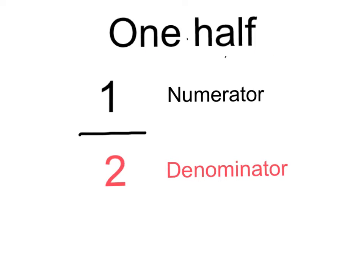Within that fraction, the top number, the number 1, is known as the numerator. That tells me the number of parts that I have. The bottom number, in this case the number 2, is called the denominator. That tells me how many parts there are altogether. In one half, I have 1 out of 2 equal parts.